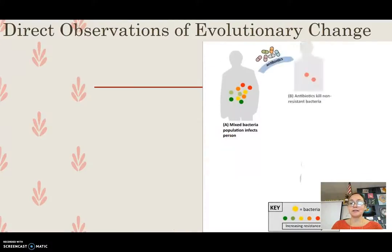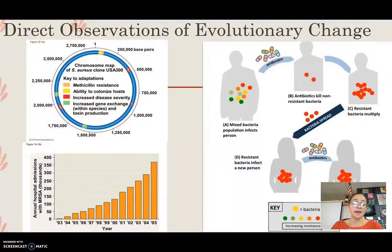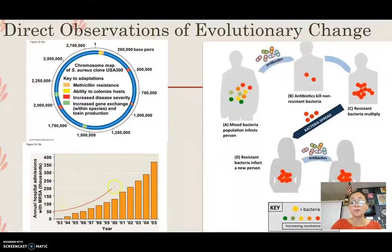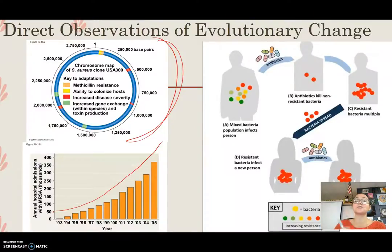Antibiotic resistance makes it more and more difficult to kill infections. When we look at the annual hospital admissions with MRSA measured in thousands, we can see an increase over time in cases of antibiotic resistance. The plasmid from the MRSA bacterium carries different genes and adaptations that help it survive in environments where antibiotics are killing off the ones who lack the genetics to survive.